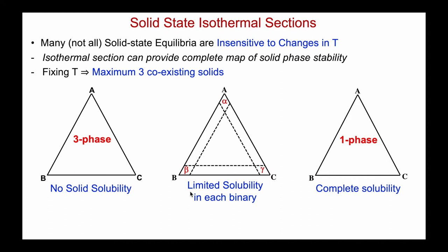Then there may be limited solubility, and the diagram can look a little more complicated. We'll have regions where B and C are soluble to some degree within A — we'll call that the alpha region. Similarly, for B, A and C can be soluble to some extent forming a beta solid solution, and a gamma solid solution on the C side.